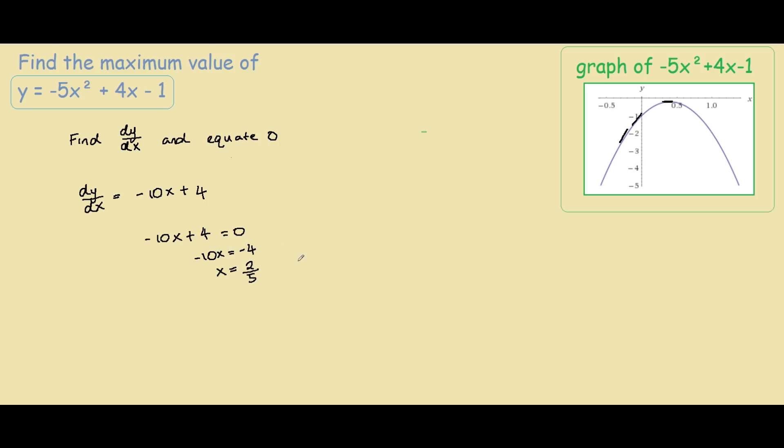So what this tells us is that the maximum value occurs at 2 fifths. So if we were to graph this, it would be here at 2 fifths.